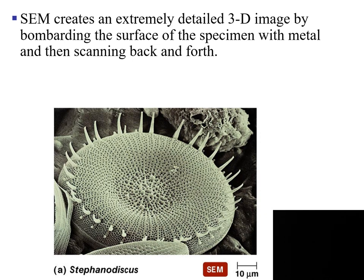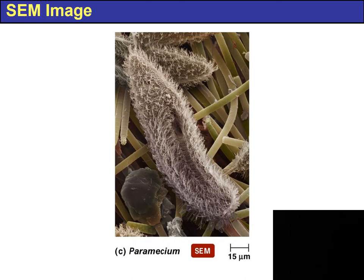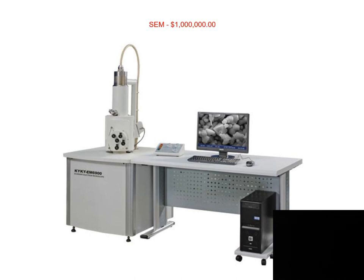The scanning electron microscope creates an extremely detailed three-dimensional image by bombarding the surface of the specimen with metal, then scanning back and forth to create this beautiful image. Here are some images produced by the scanning electron microscope: Aspergillus the fungus, Paramecium from general biology, and some bacteria that we will be looking at in this class. The scanning electron microscope is very expensive — it costs roughly one million dollars.